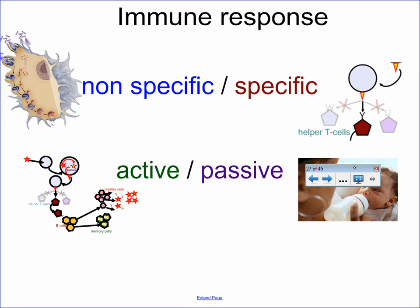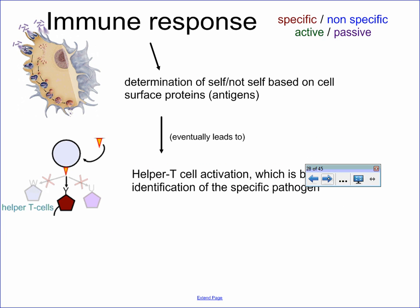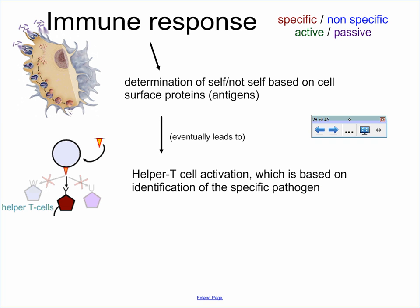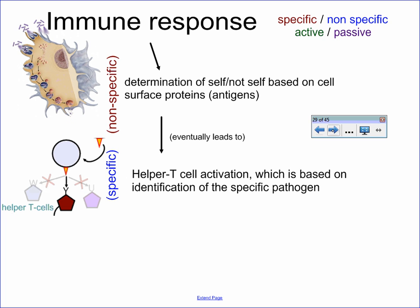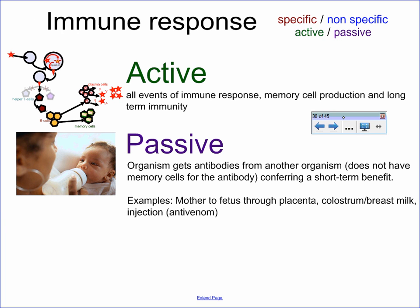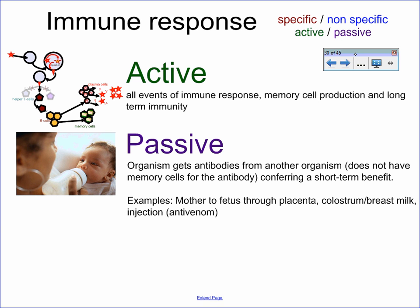Your immune response can be either non-specific or specific, and also active or passive. Determining self versus not-self is the non-specific response, which eventually leads to a more specific response where your body goes through the immune response to a specific pathogen — that is a specific immune response. As for active and passive immunity: active immunity is that full immune response cycle producing an antibody product in response to a pathogen. Passive immunity is when you get antibodies from another source — maybe a mother, maybe an injection — and it's not something your body has done actively.